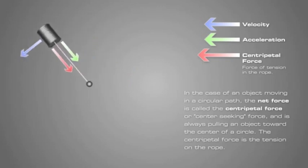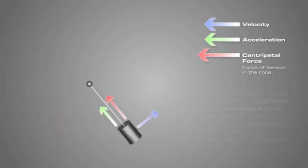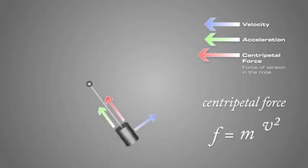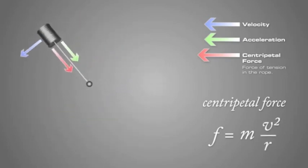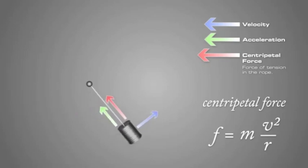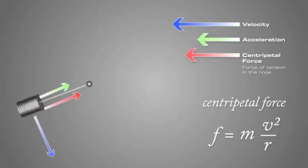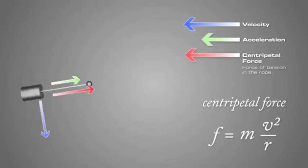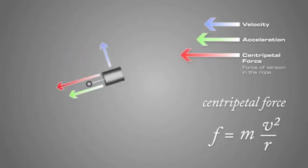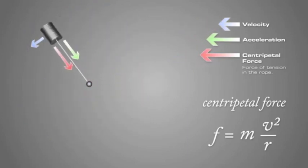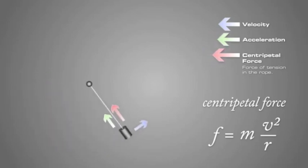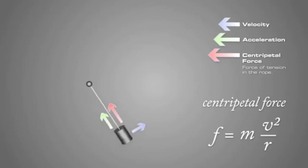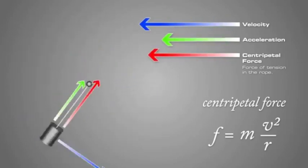The centripetal force is the tension on the rope. The centripetal force is equal to mass times velocity squared divided by the radius. As these variables change, so will the centripetal force. An increase in mass or velocity, or a decrease in radius, will result in an increase in centripetal force. A decrease in mass or velocity, or an increase in radius, will result in a decrease in centripetal force.